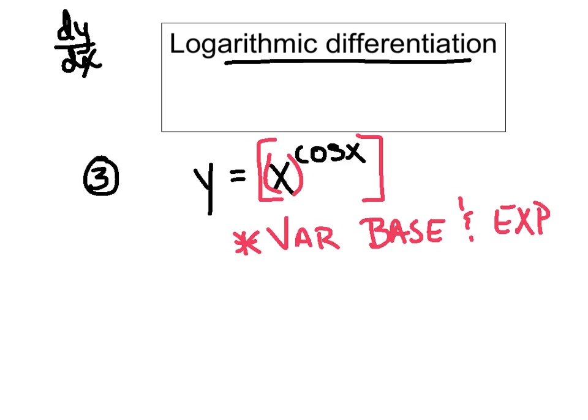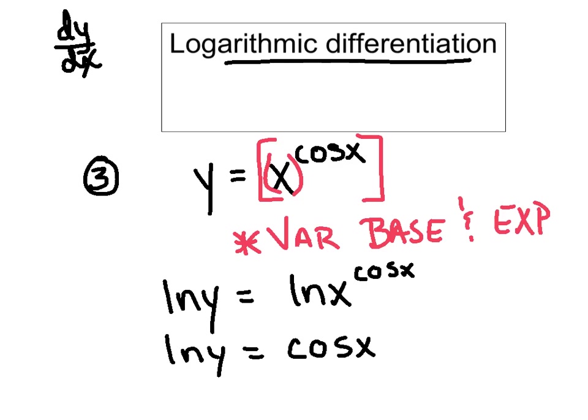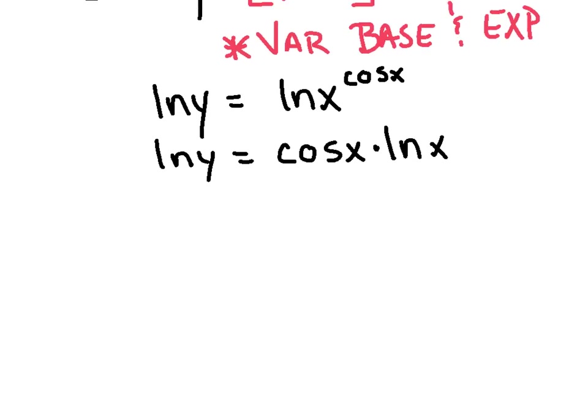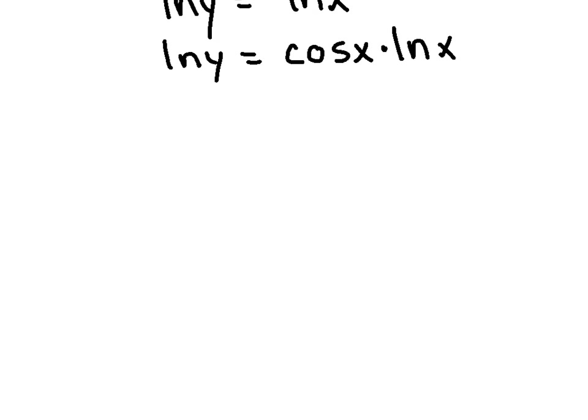So what we're going to do, we're going to take the natural log of both sides. This is not necessarily a calculus move. It's just a very basic algebra 2 move. Whatever we do to one side, we do to the other. What that allows us to do is to use one of the log properties that says the exponent can become the coefficient. So now it's the cosine of x times the natural log of x. Put a little multiplication in there just for emphasis. And now we're ready to do a little bit of calculus here and take our derivative.